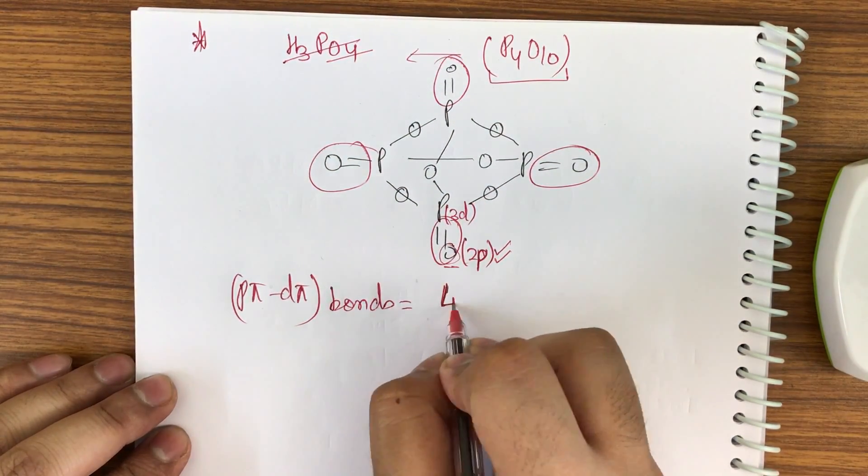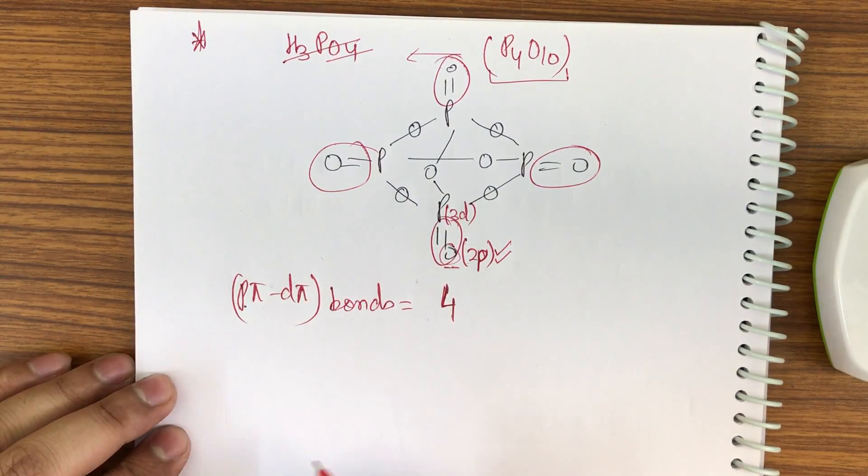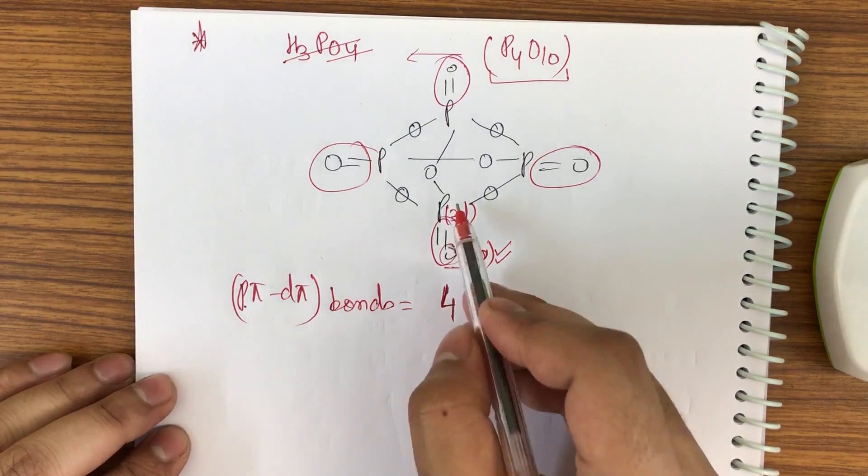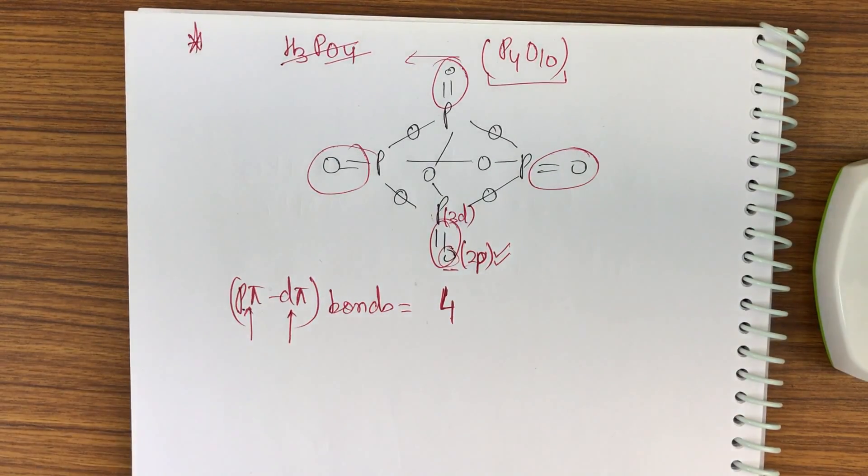So it will take 2p orbital in use, it will take 3d orbital in use. So 1, 2, 3, 4 - so I get 4. Now I hope that you're able to differentiate when to get a ppi-ppi bond and when to get a ppi-dpi bond. If d orbital is involved, then it has to be ppi-dpi bond.